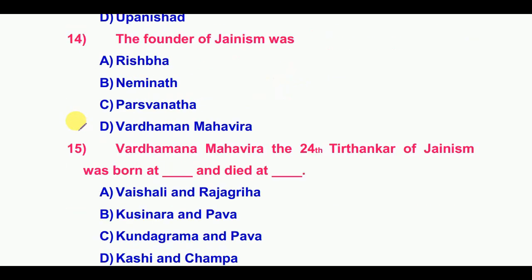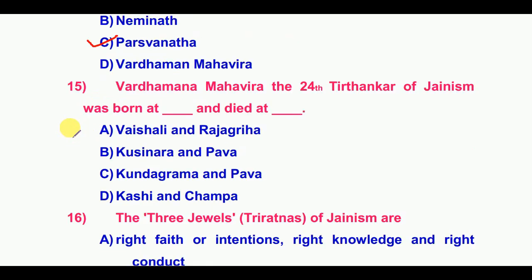The founder of Jainism was Parshvanatha. Vartamana Mahavira, the 24th Tirthankara of Jainism, was born at Kundagrama and died at Pavapuri.